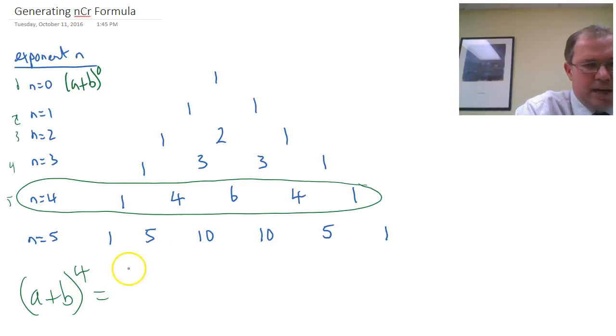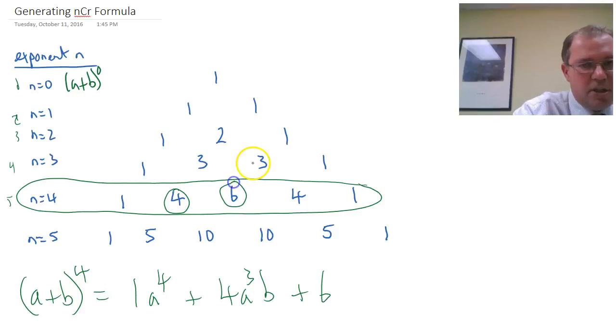And I'm just going to write down what it is. It's going to be 1 times a to the 4, plus the next coefficient is 4, and I need a cubed b going down 1 power in the a and increasing b by 1 power, plus 6 is the next coefficient, drop down a power, so a squared, and increase the b by 1 power.